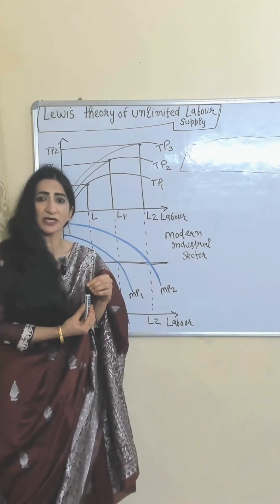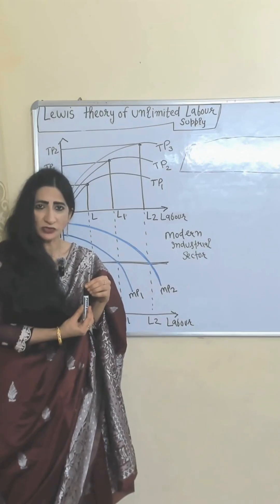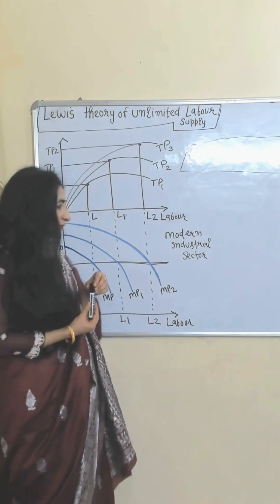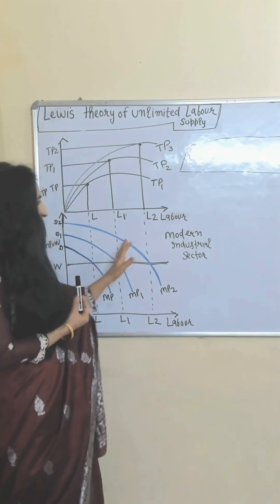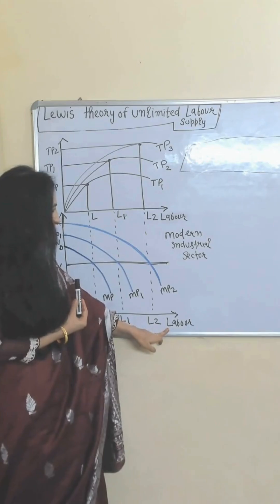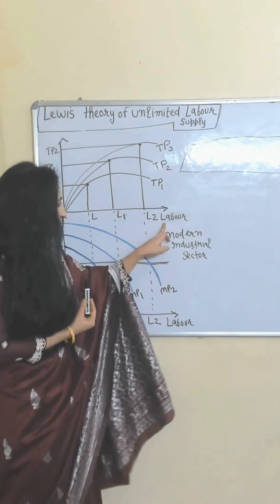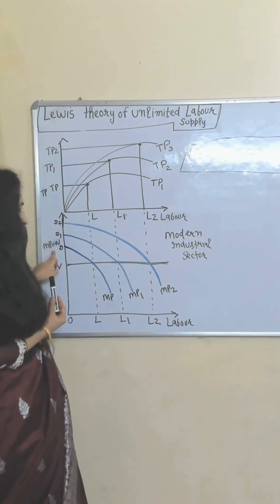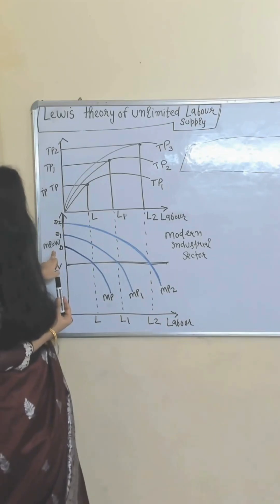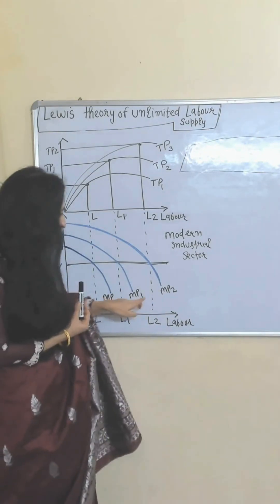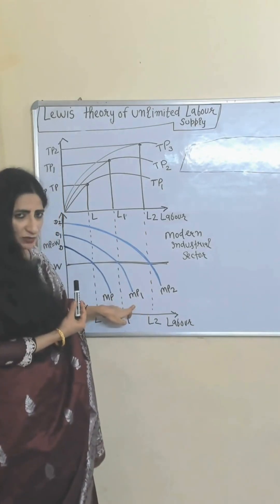As capital accumulation increases, investment, output, employment, and income also increase, and eventually our economy grows. This diagram belongs to the modern industrial sector. Here we have labor, the marginal product of labor which is equal to wages, and total product.